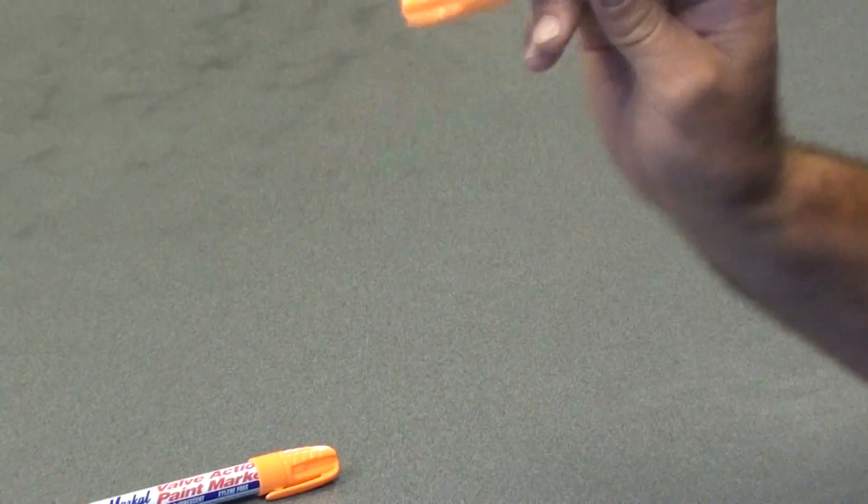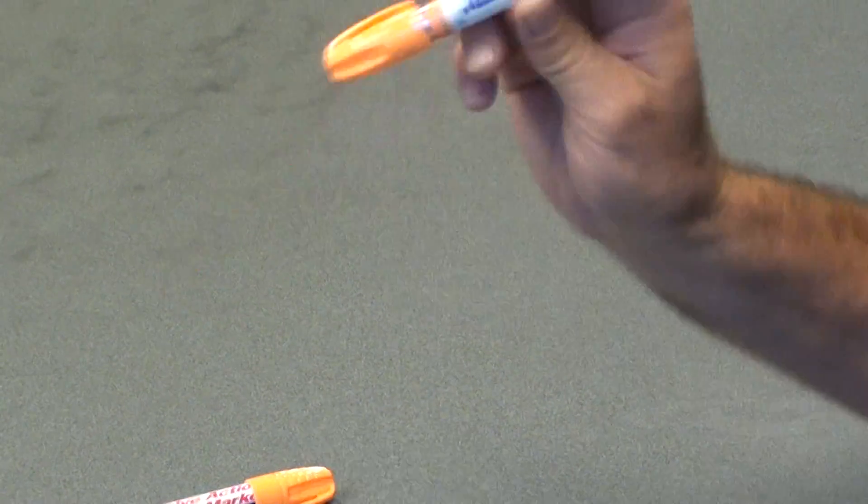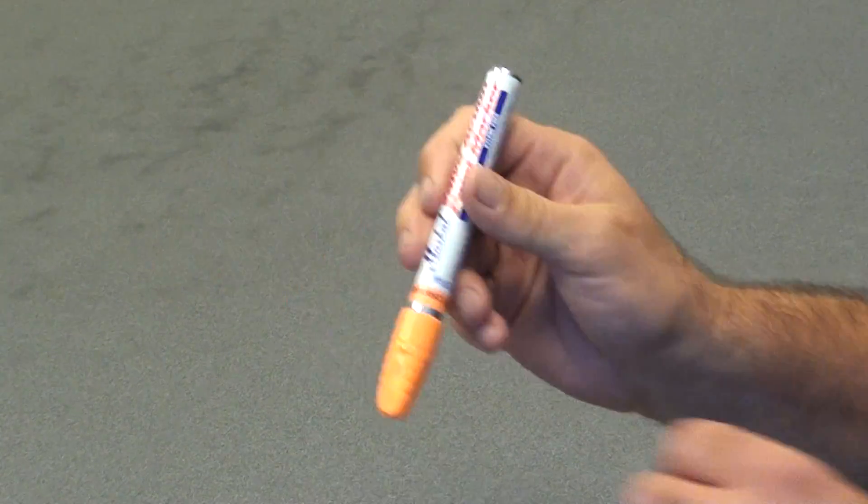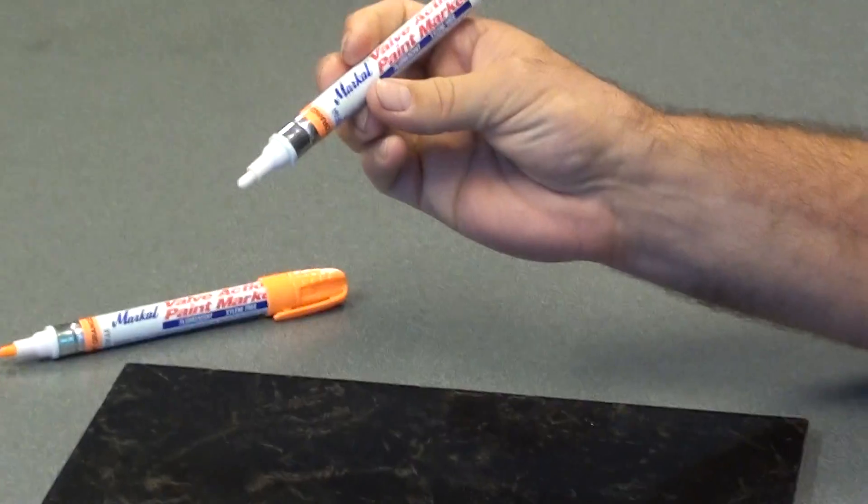To use the marker you want to shake it thoroughly so that you can hear the ball mixing the paint up. When you hear that you can take the cap off.